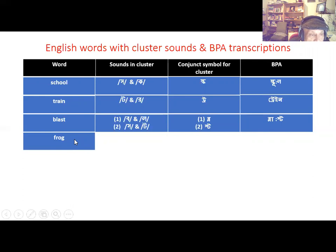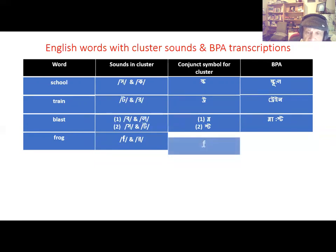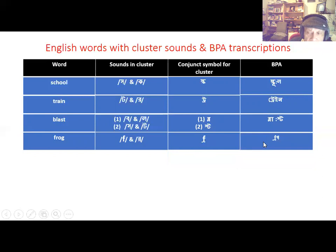Here we have the English word 'frog'. Frog has the cluster sound /fr/, where the individual sound /f/ is not present in the Bengali language. So we use the f-symbol imported to represent that first sound. The conjunct symbol for the cluster /fr/ combines f and r, and the final BPA transcription of the pronunciation of 'frog' is written accordingly.